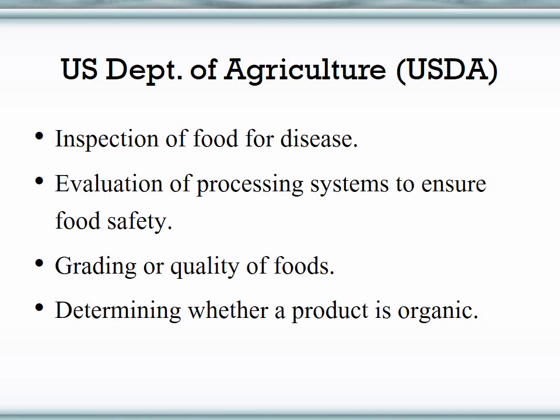The USDA's role in food production is a little different from that of the FDA — it actually examines the individual foods, inspecting them for contamination or risk for causing disease in humans. It also looks at the quality of foods, and through examining quality it is able to establish a specific grade for that food. Finally, the USDA is responsible for the organic designation. There are three levels: 'made with organic ingredients' means at least 70% is organic; 'organic' means 95% or more is organic; and '100% organic' means 100% of the ingredients used in processing are organic.